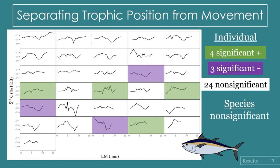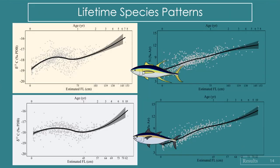For blackfin tuna, the majority of individuals had non-significant correlations, and as a species it was also a non-significant correlation. Looking at species-wide patterns using locally weighted scatter plot smoothing to remove noise, both species show similar patterns: delta carbon increases early in their lives, then there is a dip around or just before age one. We're assuming this reflects ontogenetic movement — these fish are moving inshore into higher delta carbon environments early in life, then moving back offshore into lower delta carbon environments just before age one, once they reach a good size.